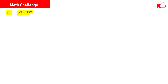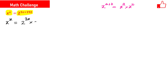We will use some rules of exponents to solve this problem. If we have x raised to the power a plus b, this can be written as x raised to the power a times x raised to the power b. Using this result, we keep the left side as is and write the right side as 2 raised to the power 3x times 2 raised to the power 192.